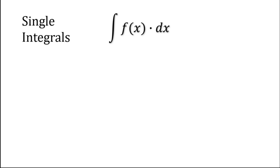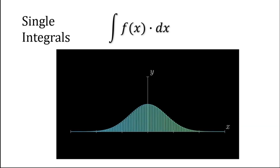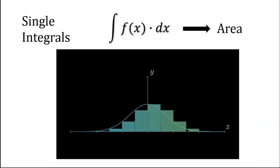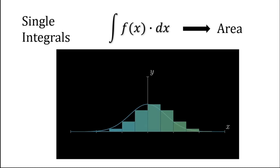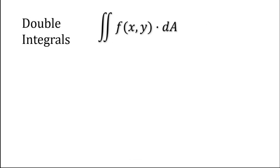Let's say we have a function f, and if we integrate that function f with respect to dx, what we are bound to get is the area under that function. So integrating f with respect to dx is one dimension, and what we get is a two-dimensional thing — that is, area.